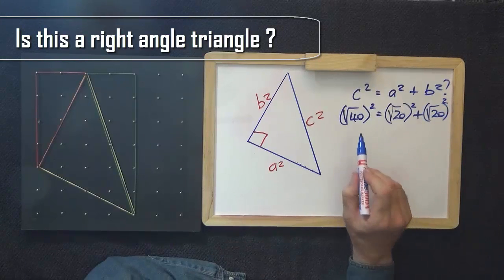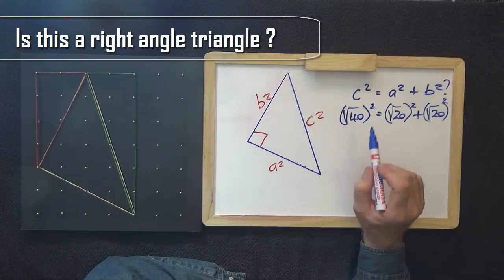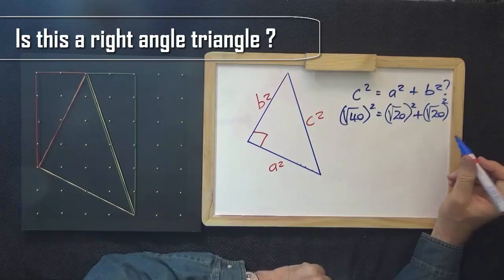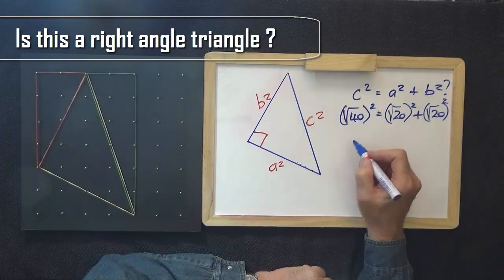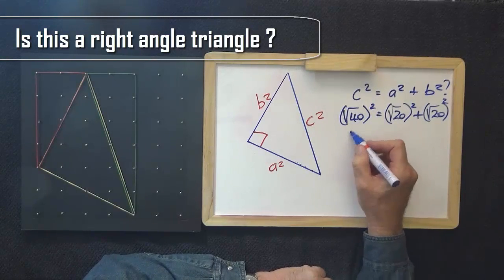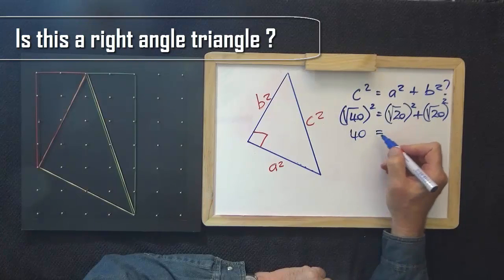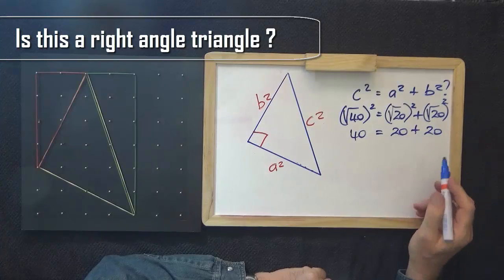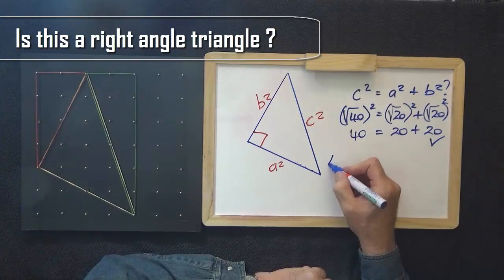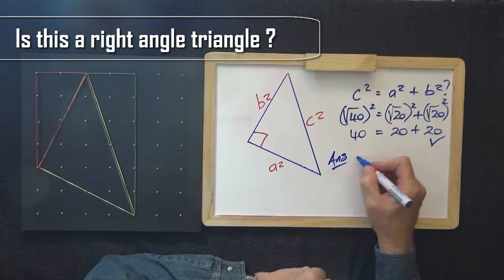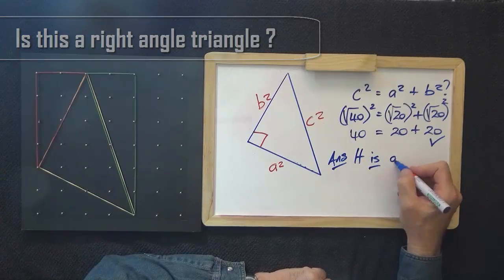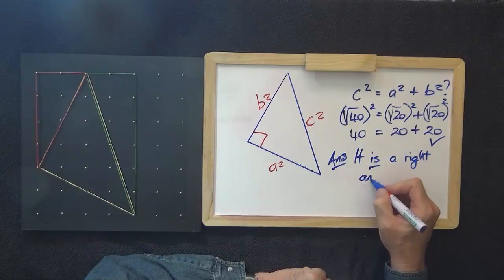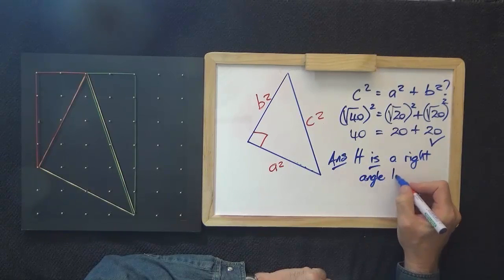Now, the question is, does the square root of 40 squared equal the square root of 20 squared plus the square root of 20 squared? Well, from your rules of indices, the square root of 40 squared is 40. Does 40 equal 20 plus 20? The square root of 20 squared is 40. It is a right angle triangle.